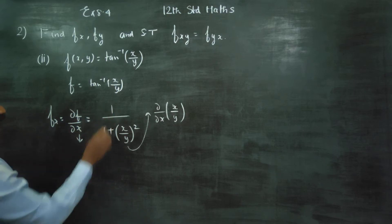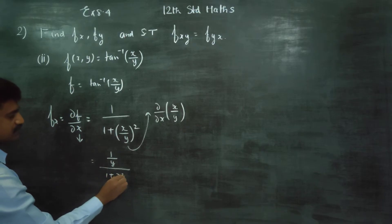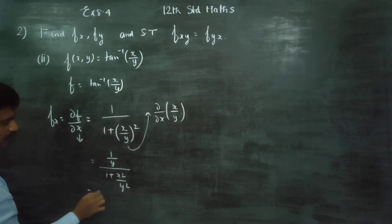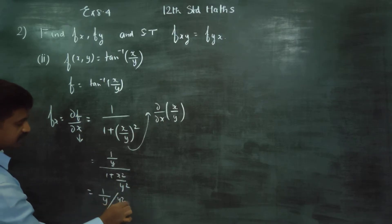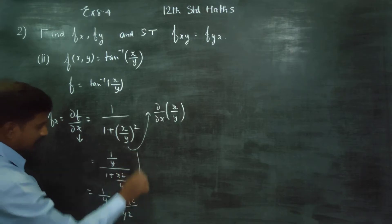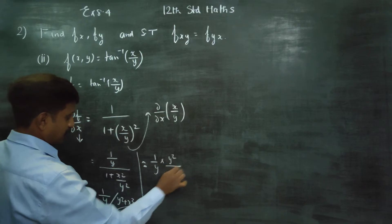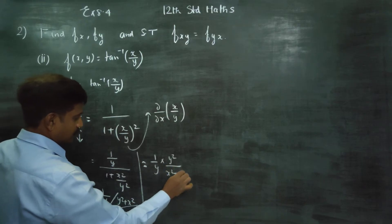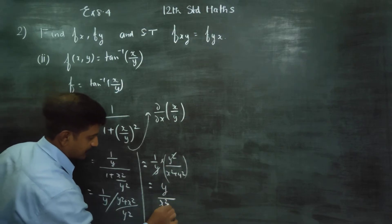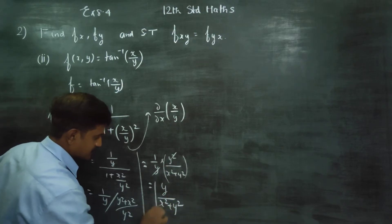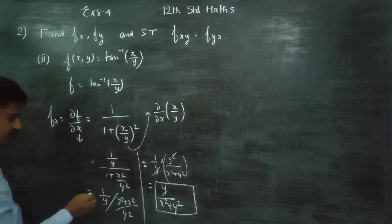Your answer will be: numerator 1 by y, by 1 plus x square by y square — cross multiply. That gives 1 by y, by y square plus x square by y square. If you simplify this: 1 by y into y square by x square plus y square — cancel. Your answer is y by x square plus y square. This is your dou f by dou x.